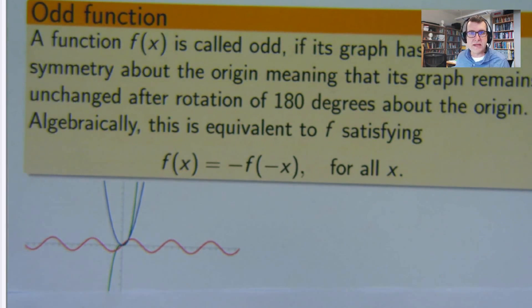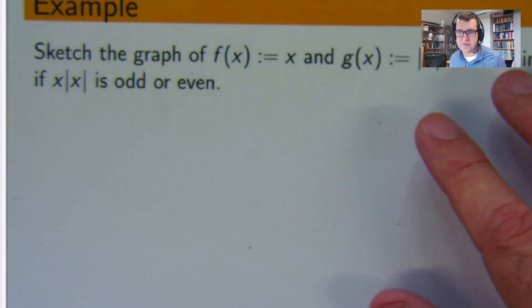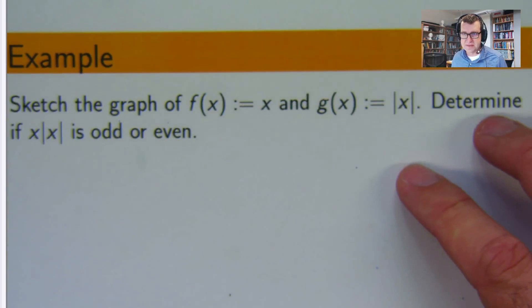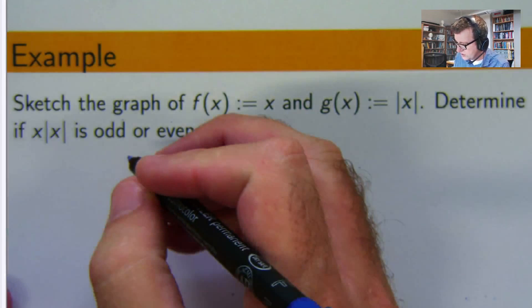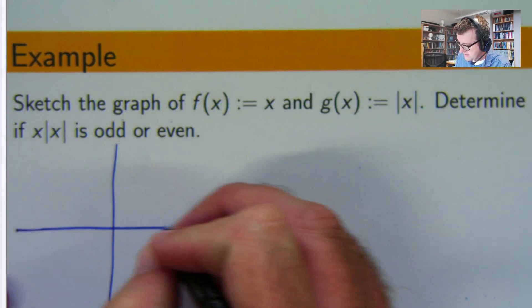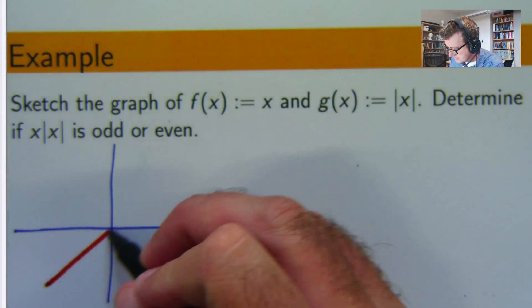And there are many, many graphs that are neither odd nor even. So back to the example. Let's sketch these two graphs and then we can work out whether they are odd or even. So this is an easy one to sketch, it's going to look something like that.